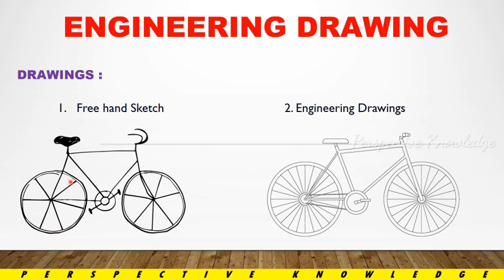A freehand sketch has rough dimensions and no proper scale ratio. If you have a cycle drawing as a freehand sketch, it is not to measure. An engineering drawing uses a proper scale ratio to draw and indicate details. So the difference is: a freehand sketch has rough profile and dimensions, while an engineering drawing has an accurate profile with correct dimensions.